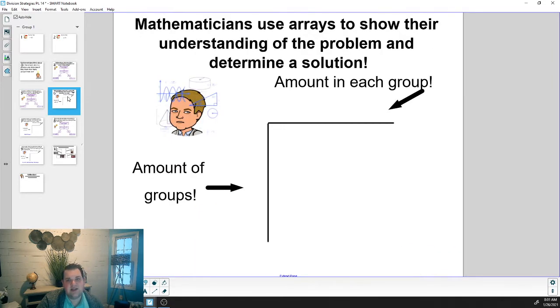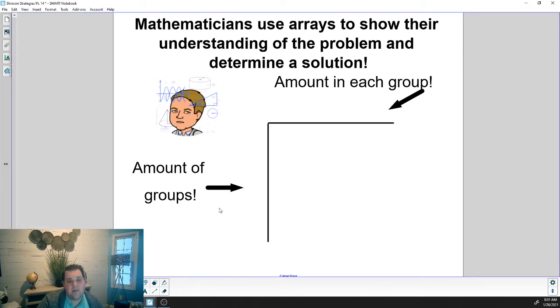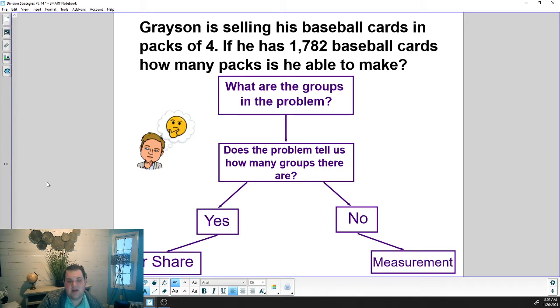That will take us to actually solving it. We use that top row of array to show the amount in each group. This is where we put how much is in each group. Over on the side is where we put how many groups there are. Because this is measurement, we don't know how many groups there are, but we do know how much is in each group. So we're going to put a four up here at the top and now we're going to take away groups of four until we get to this number, 1,782.